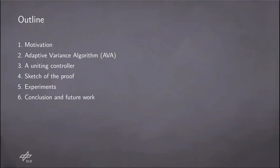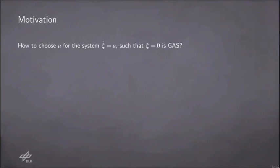We will then have a look at the proposed control scheme, which goes under the category of uniting controllers. We will also quickly go through the steps needed to prove the stability of the proposed control scheme. After the proof, we will see the controller in action with some experiments. And finally, I will summarize the presentation and give some hints for future work.